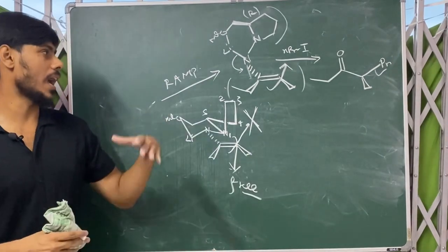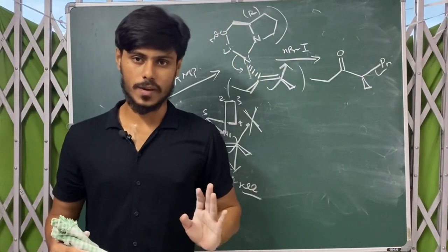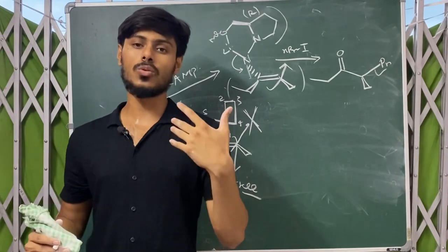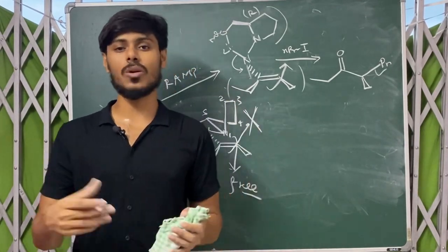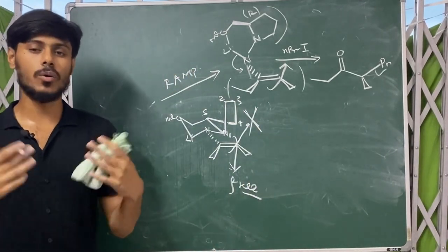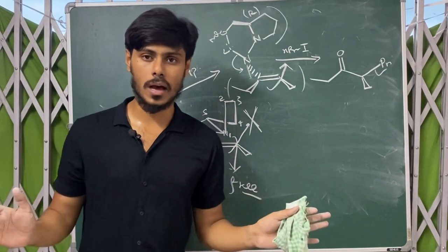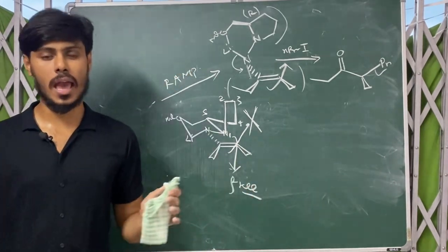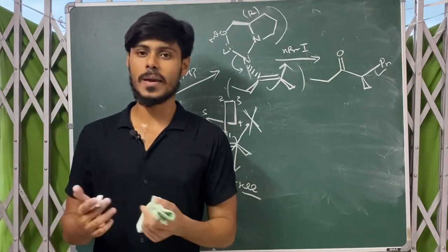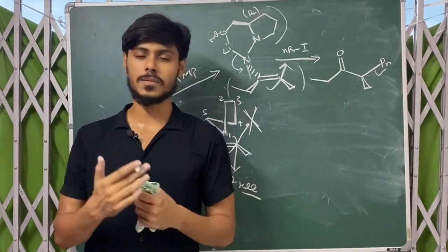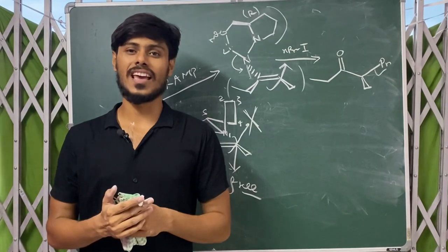In our question we had R-AMP, so attack takes place from the top face. If it was S-AMP, the attack would take place from the bottom face, and accordingly you have to answer. I hope I was able to clear all your doubts; if you have any doubts left, you can ask me in the comment section. Thank you for watching.